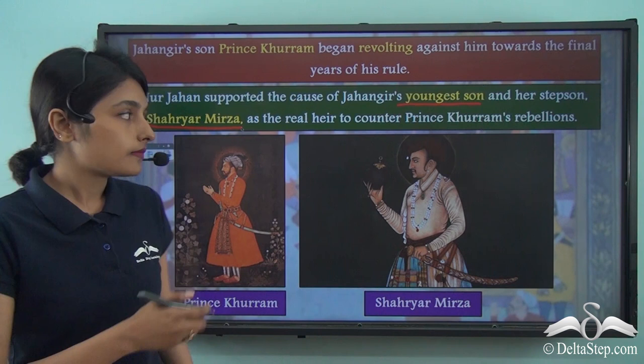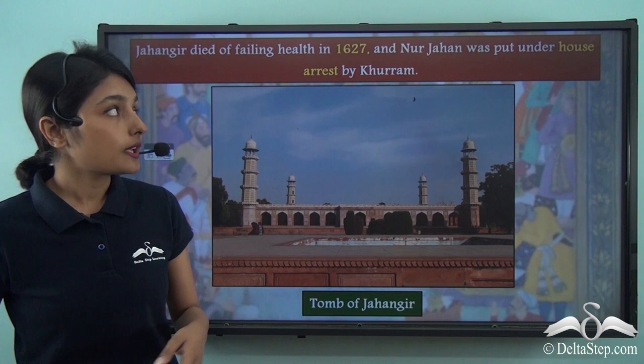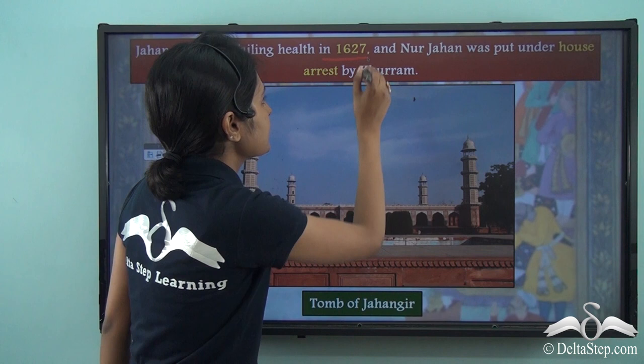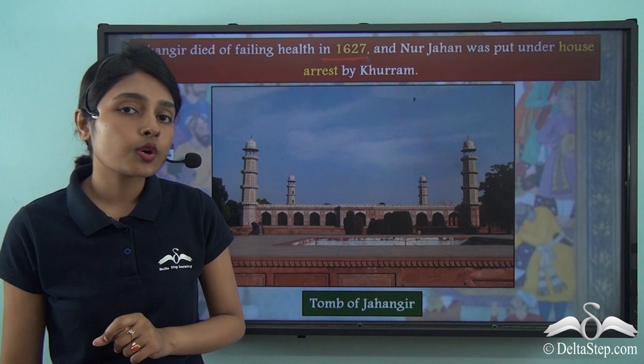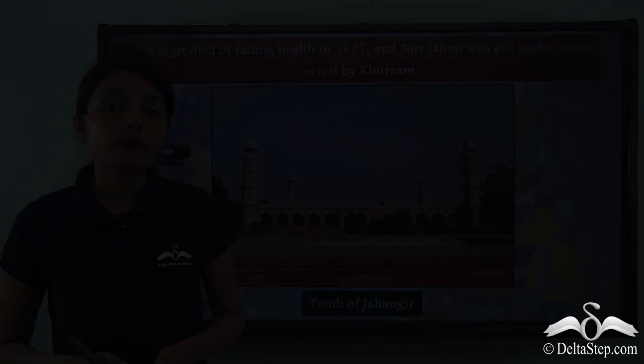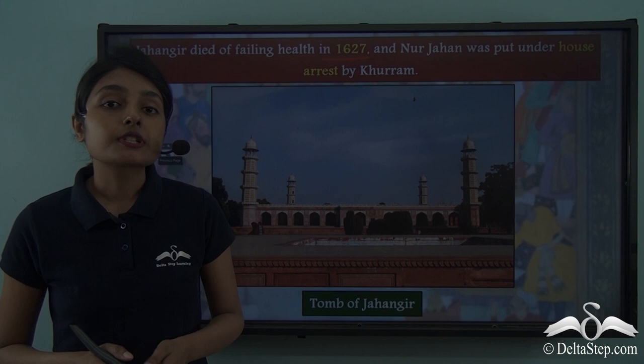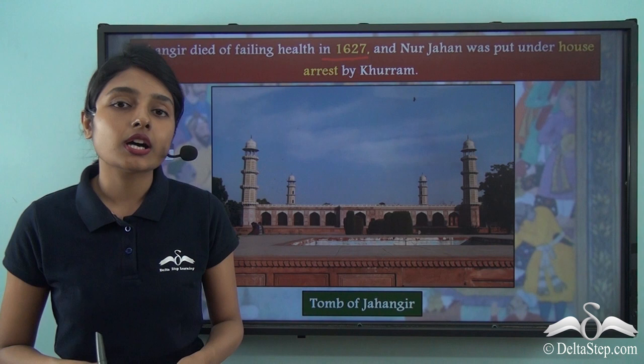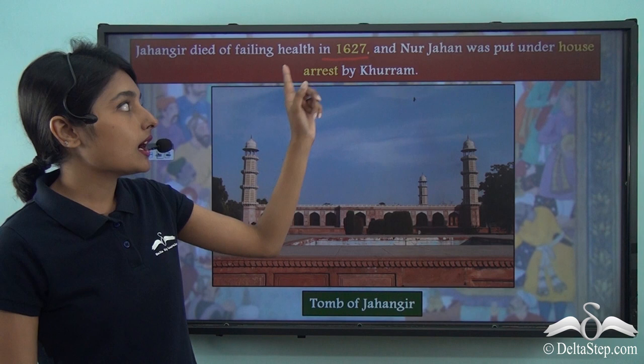However, Jahangir died of failing health in 1627. Because Nur Jahan had supported Shahriyar Mirza's cause against Prince Khurram, she was put under house arrest by Khurram after Jahangir's death in 1627. This is the tomb of Jahangir.